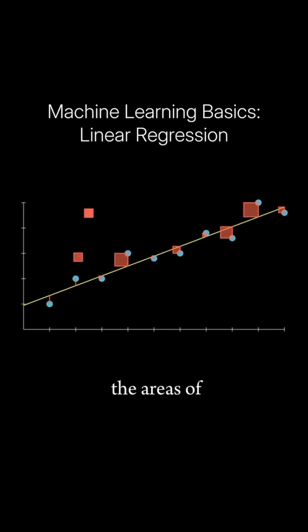If we total the areas of all of these squares for a given line, we will get the sum of the squared error and this is known as our loss function. We need to find the beta 0 and beta 1 coefficients that will minimize that sum of squared error.